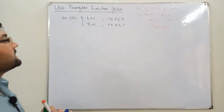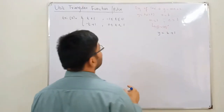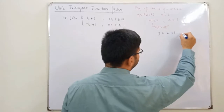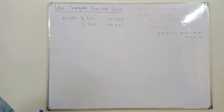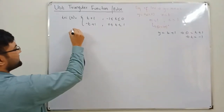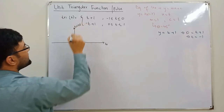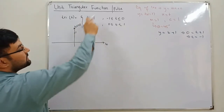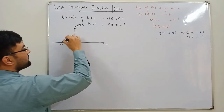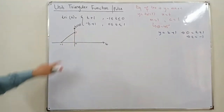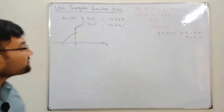From tri(t) = t + 1: if y = 0, then 0 = t + 1, which means t = -1. So at t = -1, the function equals 0, and at t = 0, the function equals 1. This gives us a line with slope 45 degrees, y-intercept equal to 1, and x-intercept at t = -1. This describes the left portion of the triangle.